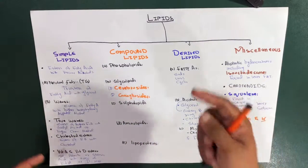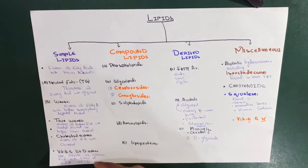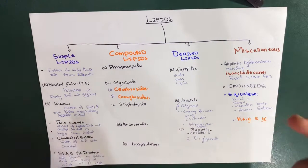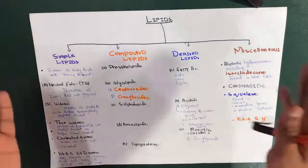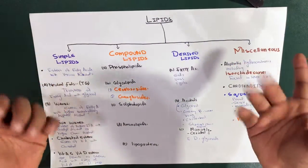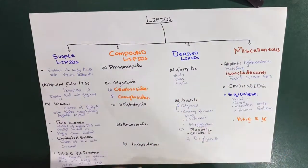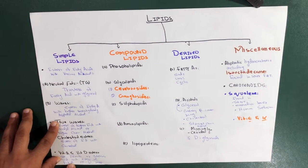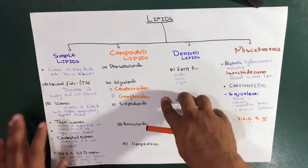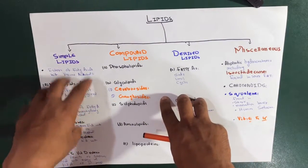Waxes are further divided into true waxes, cholesterol esters, and vitamin D esters. True waxes are esters of higher fatty acids with cetyl alcohol or higher chain alcohols. Cholesterol esters are esters of fatty acids with cholesterol. Vitamin A esters involve palmitic acid, and vitamin D esters involve stearic acid.